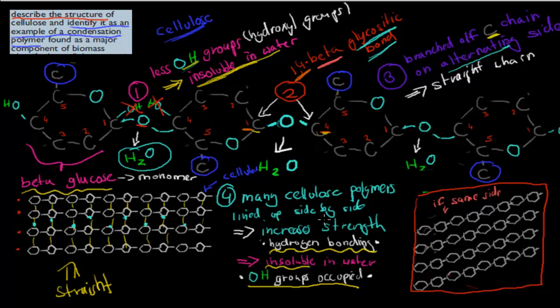There is also increased hydrogen bonding between the chains, which are lined up closely next to each other. This increases strength and decreases solubility — cellulose is not soluble in water, which is good because we don't want it to dissolve. And it's really strong as well.